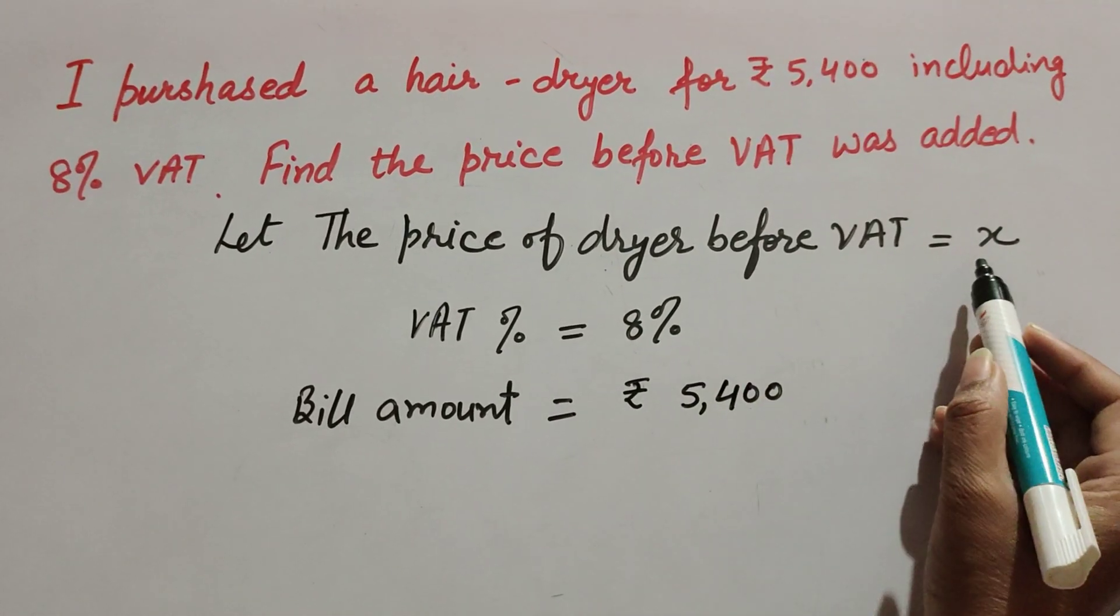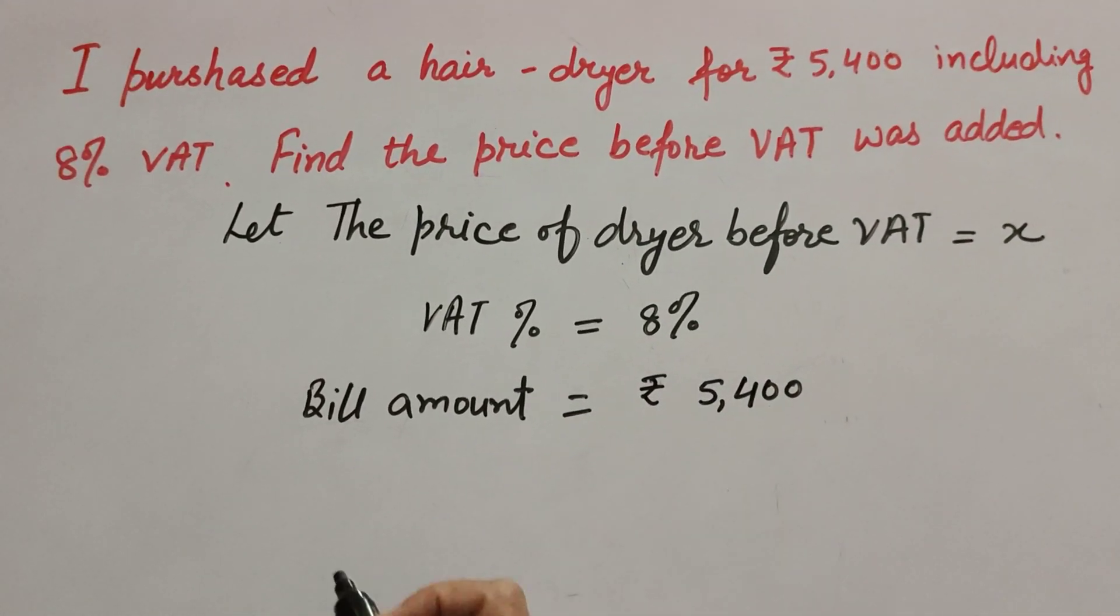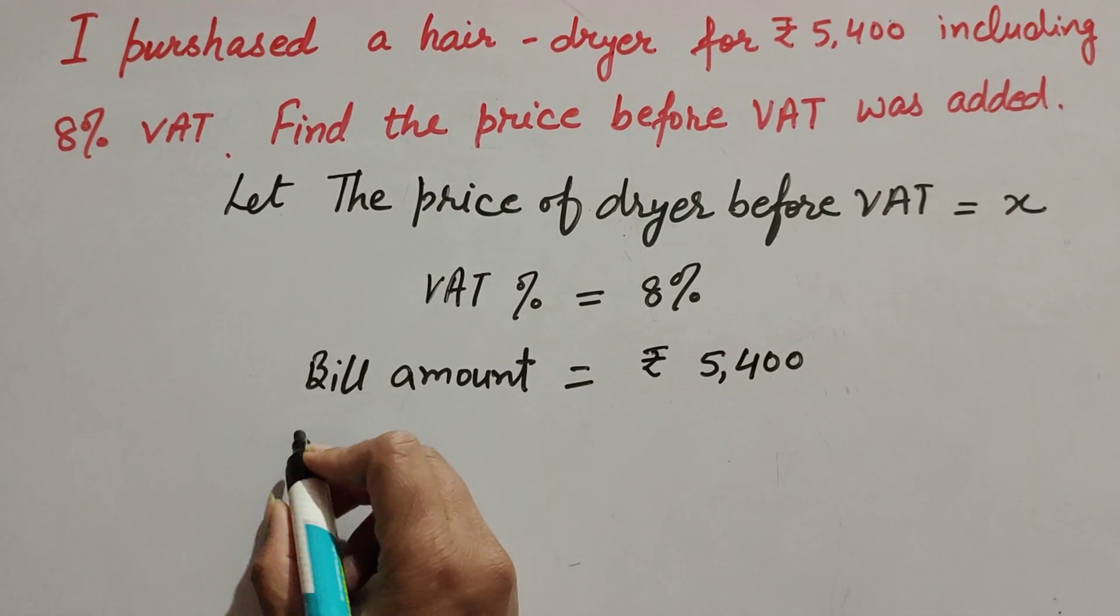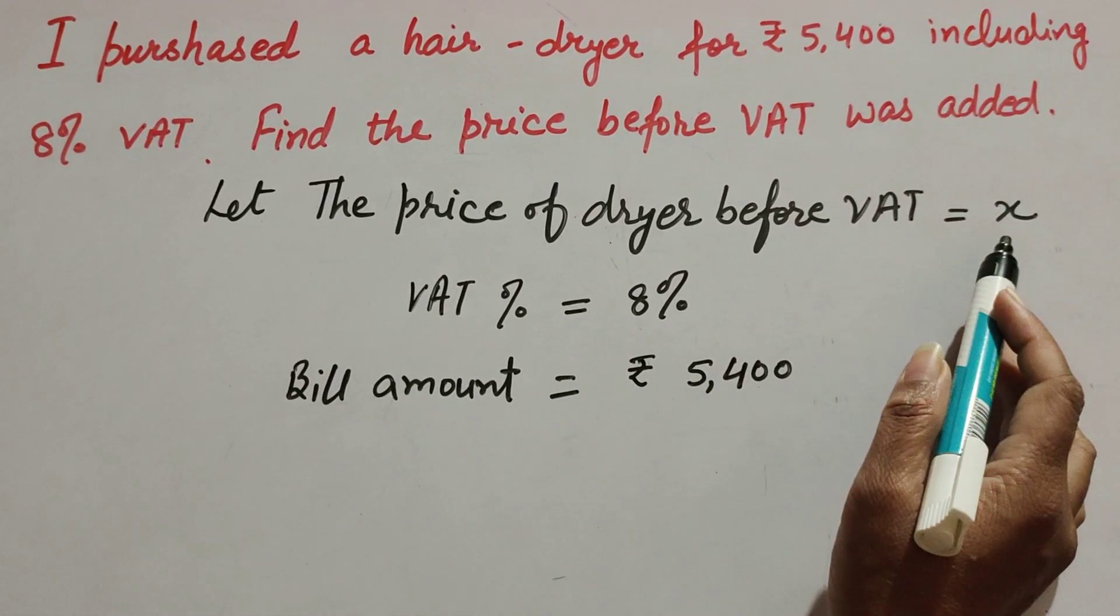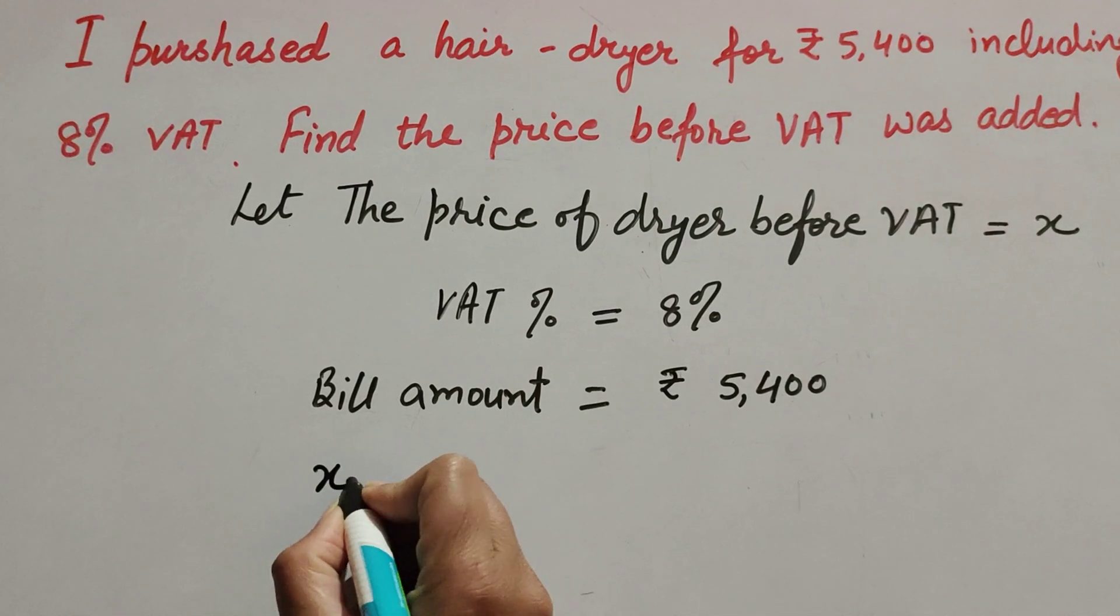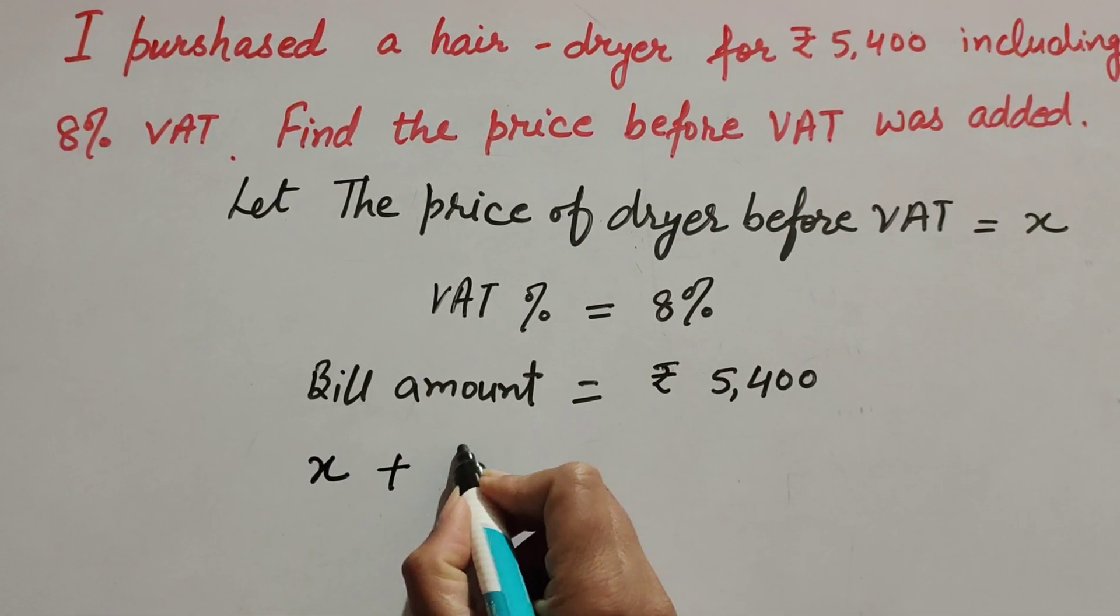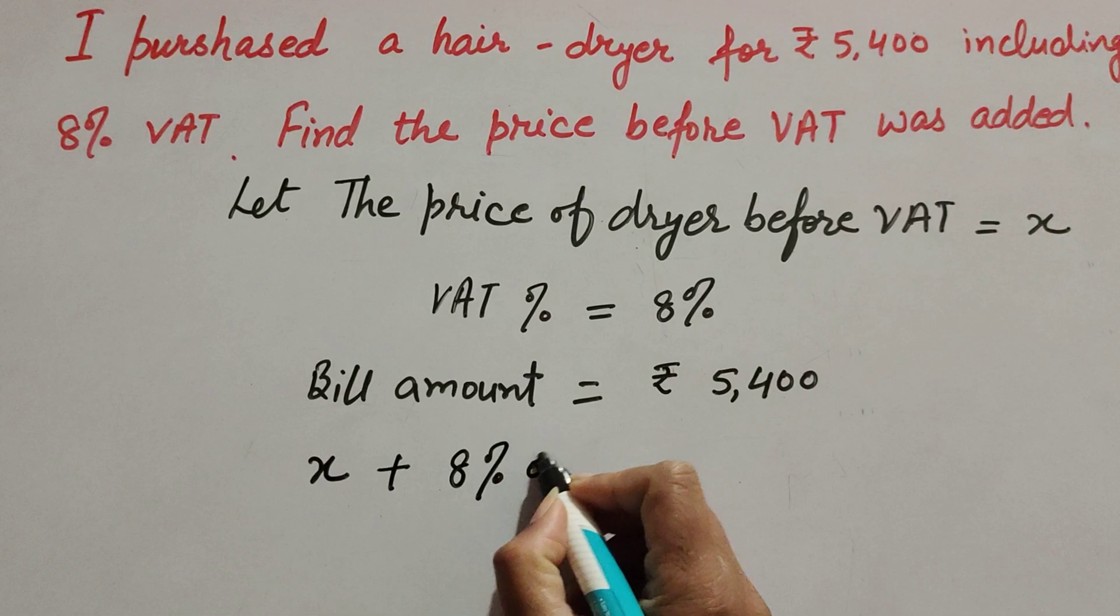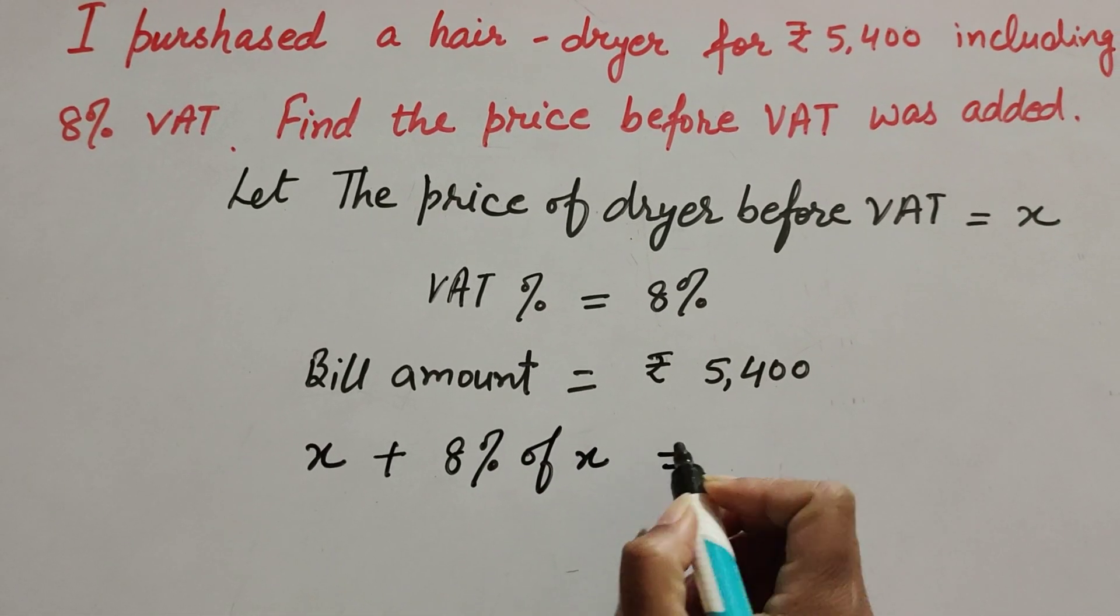Now according to the question, VAT is 8% and price of dryer is x. The VAT percentage is added to the cost price of the dryer, so it is x plus 8% of x, which equals the total price.